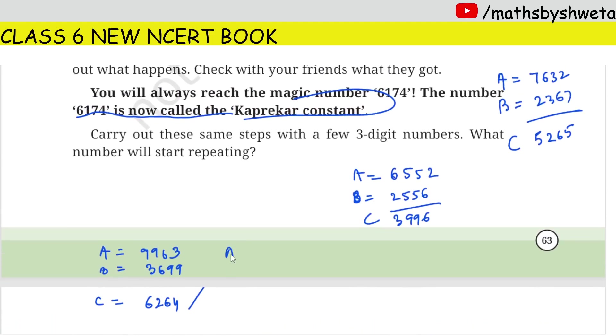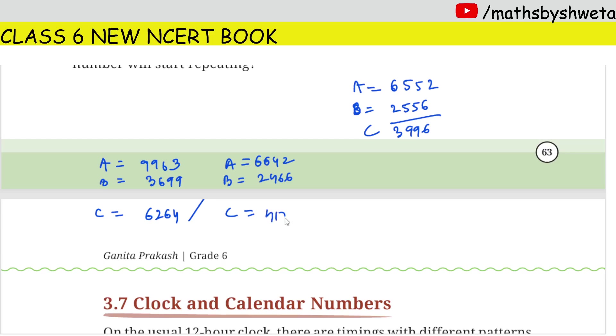I have the largest number and the smallest number and minus the number. So 6642 minus 2466. So my answer is 4176. Then again, I have the largest number and the smallest number.